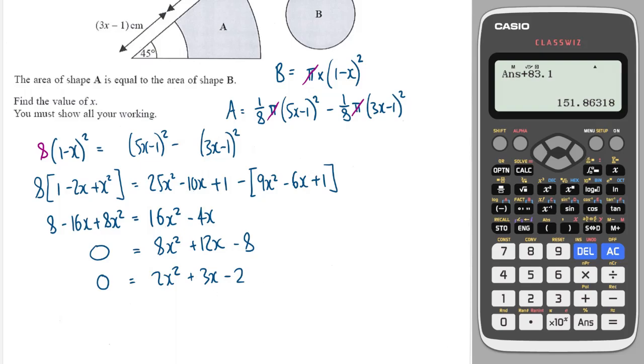I'll then need to factorise this, and I'll do that by using the ac method. So ac is equal to 2 times minus 2, which is 4. And the b term is equal to 3. So the two numbers I need to times together to make minus 4 and add to 3 are 4 and minus 1.